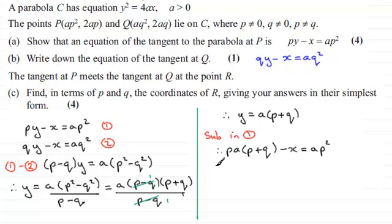If I expand the bracket, we've got ap squared plus apq, then minus x equals ap squared. Rearranging this, I can see the ap squared terms cancel. If I add x to both sides, we get x equals apq.